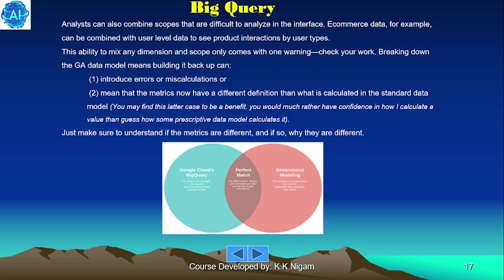Breaking down the Google Analytics data model means building it back up again — recreation. This can introduce errors or miscalculations, or mean that metrics now have a different definition than what is calculated in the standard data model. You may find this to be a benefit if you would much rather have confidence in how you calculate a value than guess how a prescriptive data model calculates it. Just make sure to understand if the metrics are different and, if so, why they are different.